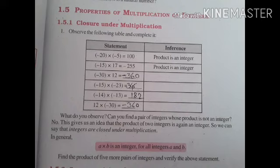Find the product of five more pairs of integers and verify whether the statement is true or false. Take your own examples and solve. The property states that the product of any two integers — positive or negative — is always an integer.